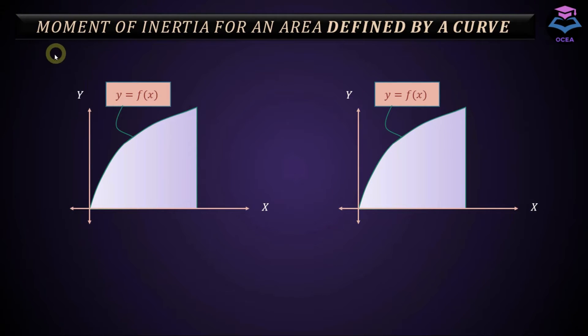How do you calculate moment of inertia for an area defined by a curve? Assume for the sake of discussion that this is the area lying below this curve and you want to determine moment of inertia of this area with respect to certain axis.